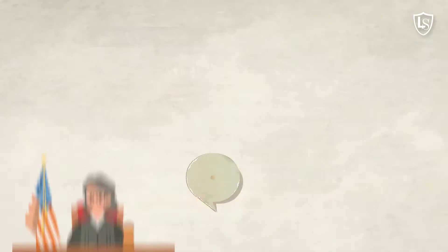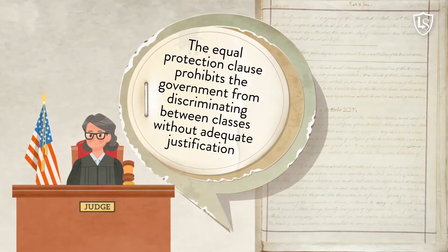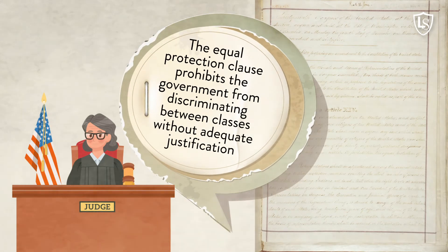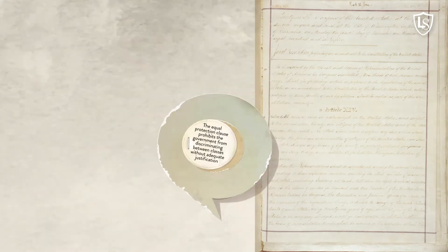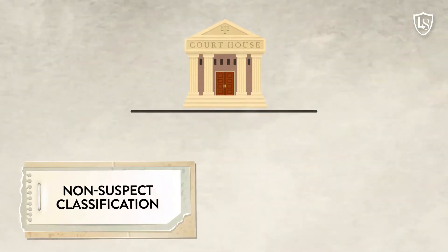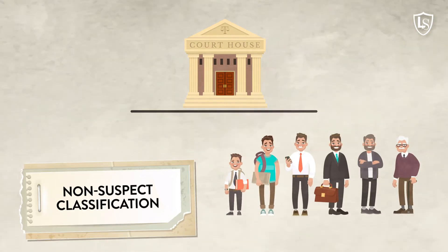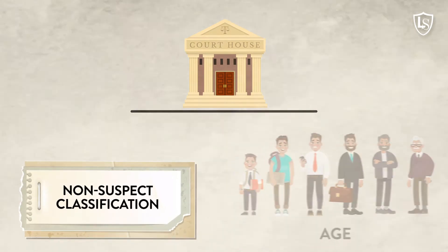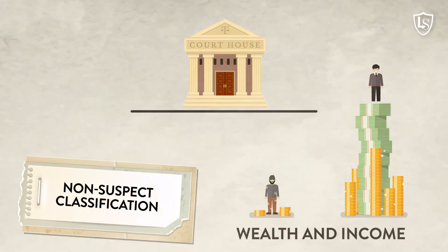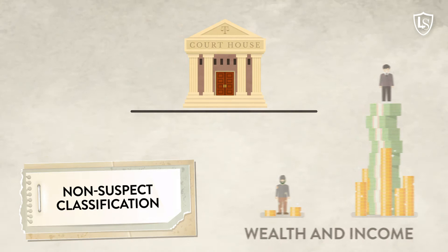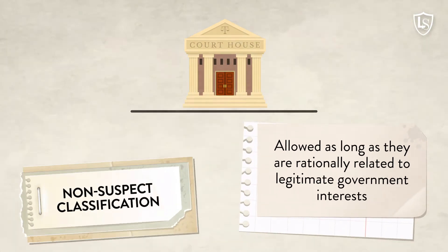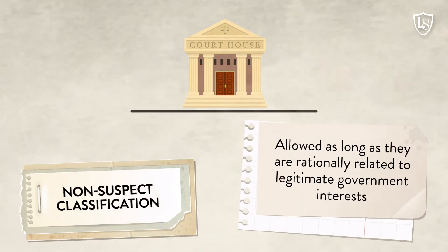The Equal Protection Clause prohibits the government from discriminating between classes without adequate justification. Discrimination on bases that the courts consider non-suspect, such as age, wealth, and income, are typically allowed as long as they are rationally related to legitimate government interests.